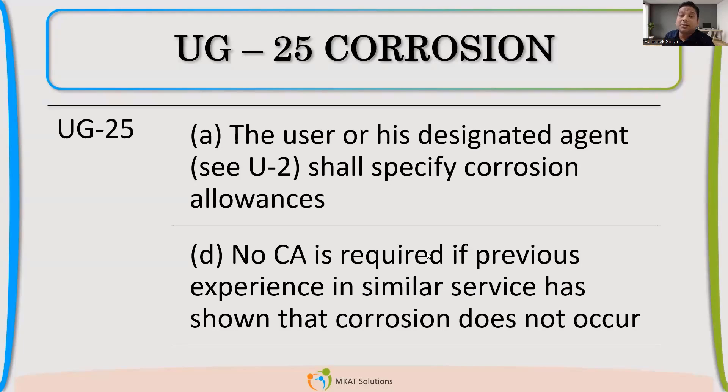Now, if user had already a similar equipment and it was in service for a long period of time and he saw no Corrosion occurring, in that case he may decide to say that no Corrosion Alliance is required for this service. So once we are getting it from the client or user, we are okay. We'll just write Corrosion Alliance 0 and do the calculation.